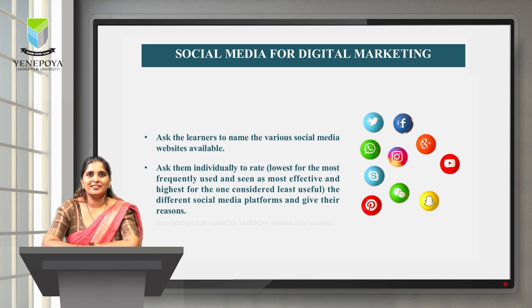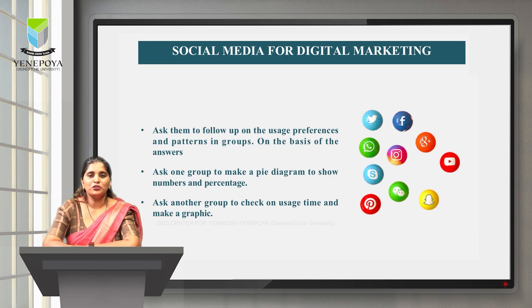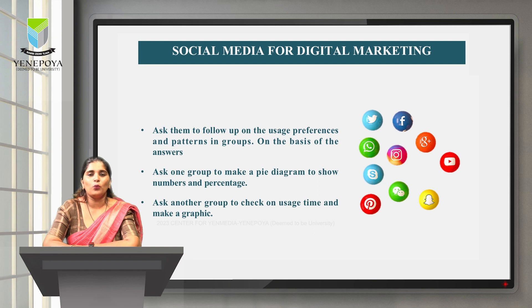Learners can be asked to name various social media websites available and rate them individually — lowest for most frequently used and considered most effective, highest for those considered least useful. They can discuss different social media platforms and give their reasons, follow up on usage preferences and patterns in groups. Based on the answers, one group can make a pie diagram to show numbers and percentages, while another group checks on usage time and makes a graphic. These activities help illustrate the usage of digital marketing through social media.